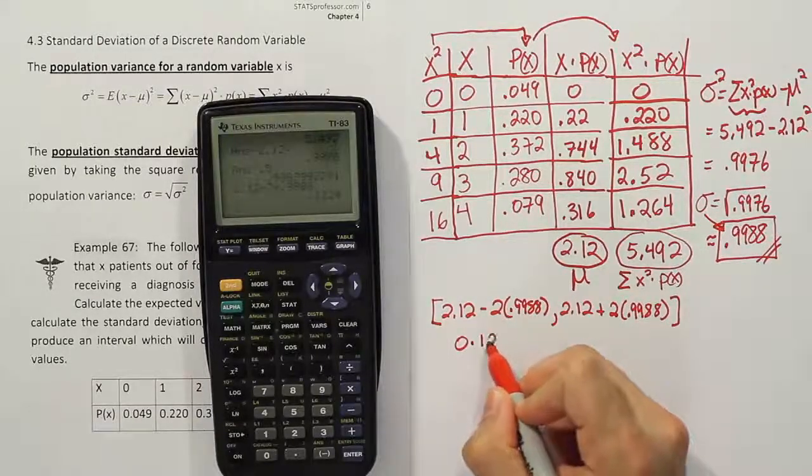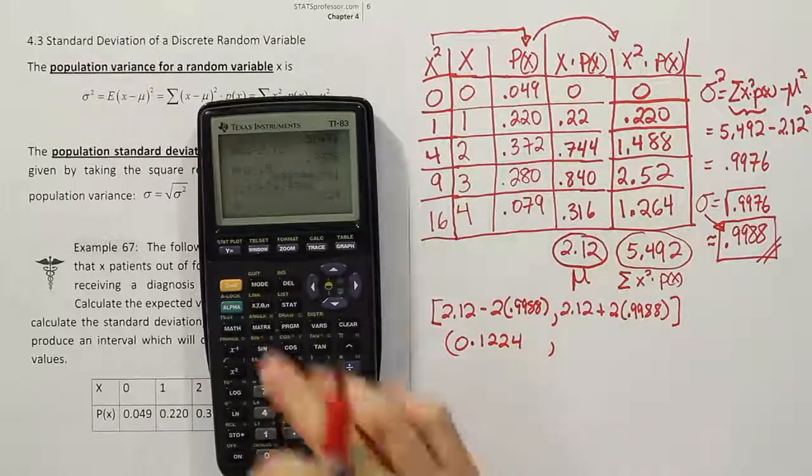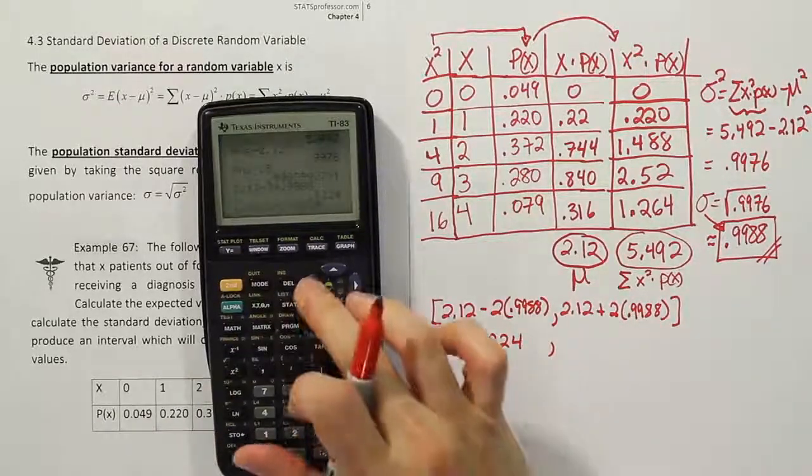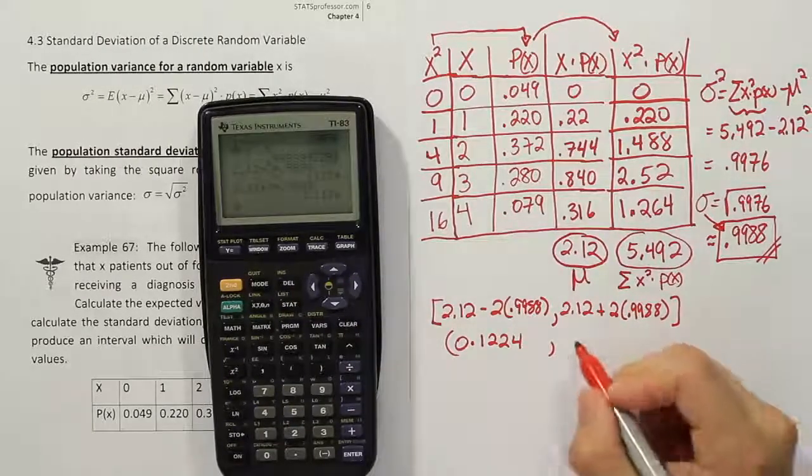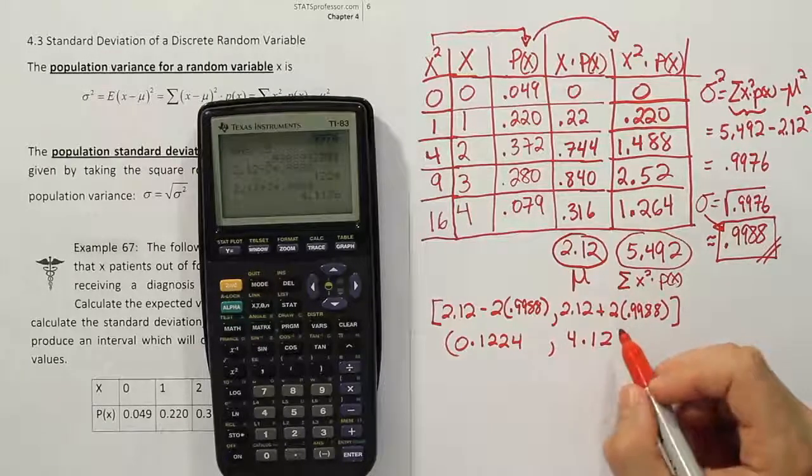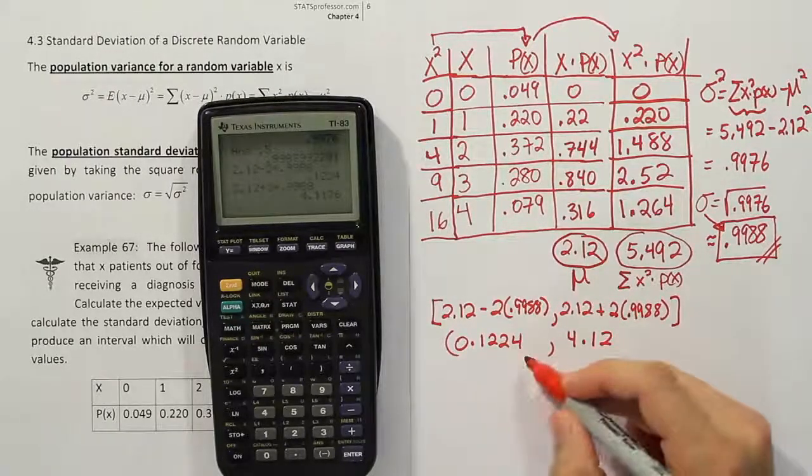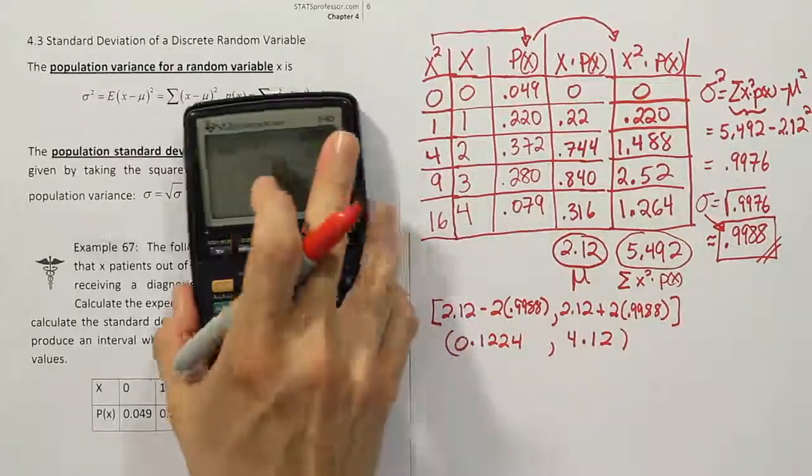So I'm going to do 2.12 minus 2 times 0.9988. And when I do that, I get a number that's pretty close to 0. It's 0.1224. It's close to 0 but not 0, right? And then I'll do the same but I'm going to add this time that 2 standard deviation value. So when I do that, I get 4.12, let's say, just for a round number. Actually, I could carry it out to 4 if I did the same as before but it doesn't matter actually. So let's just leave it the way it is.